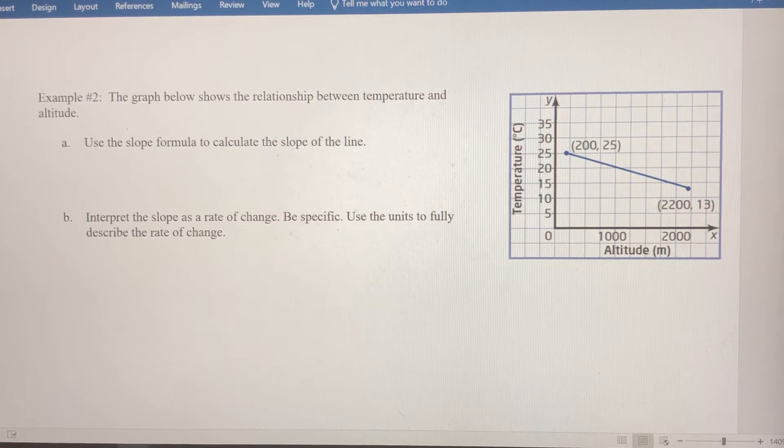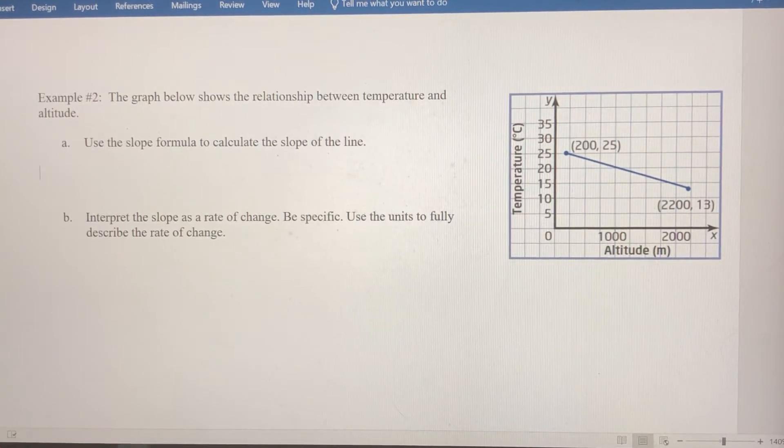So those two phrases or terms are always interchangeable. If you're thinking of slope, you're thinking of rate of change. If you're thinking of rate of change, you're thinking of slope. So it's really important to understand the link between those two things.